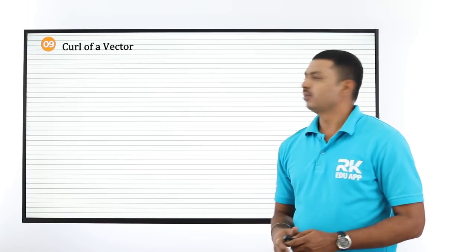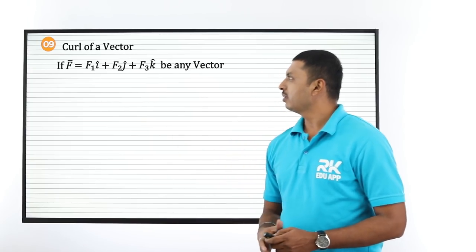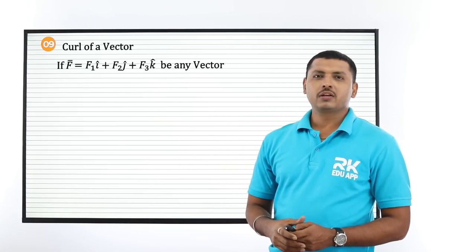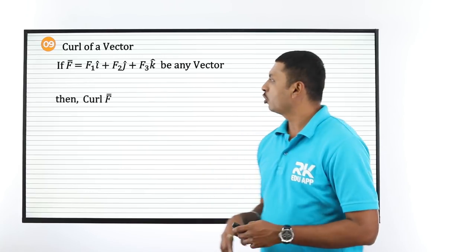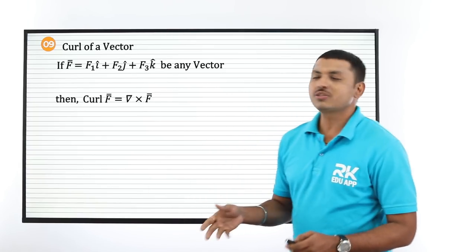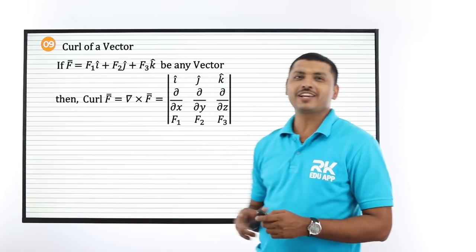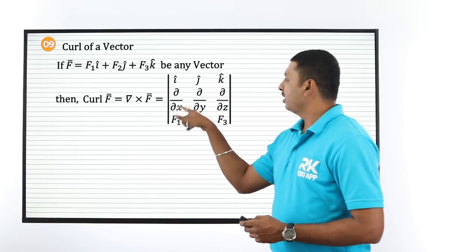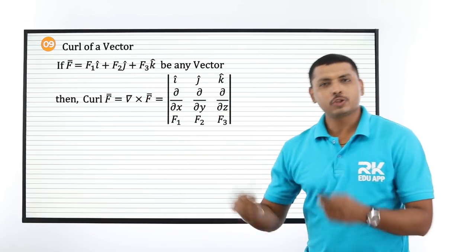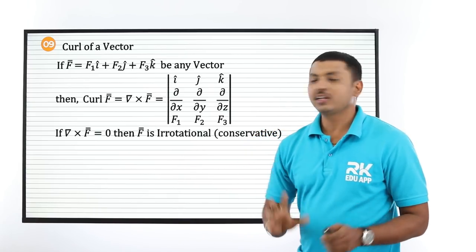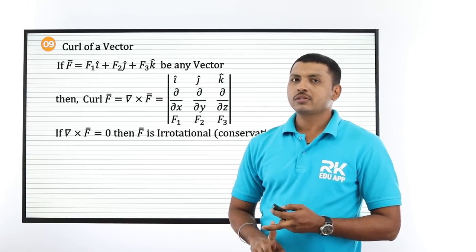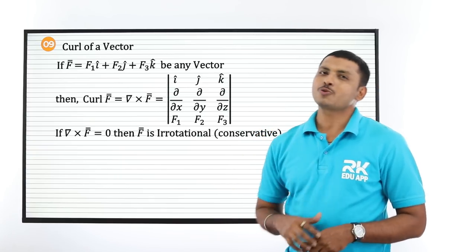Next is curl. The full form of curl is circulation. If F̄ = F₁i + F₂j + F₃k, then the curl is del × F̄ — note that divergence uses dot while curl uses cross. The cross product answer comes from a determinant: first row is i, j, k; second row is del/del x, del/del y, del/del z; third row is F₁, F₂, F₃. If this answer is 0, such a vector is called irrotational, meaning a conservative field.